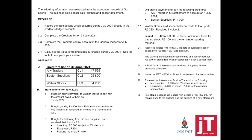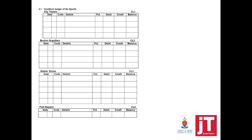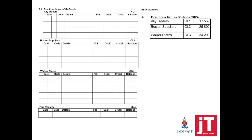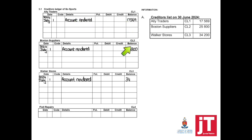Take note that this is asked a little bit differently than the activities we've done before. Now we're going to post it directly into the creditors ledger account, and from there complete the creditors control account. Starting with step number 1: write the opening balances. The date is not incorrect — the end of last month, 30 June 2024, is the opening balance on 1 July 2024. We start by writing 'account rendered' and it goes straight to balance.